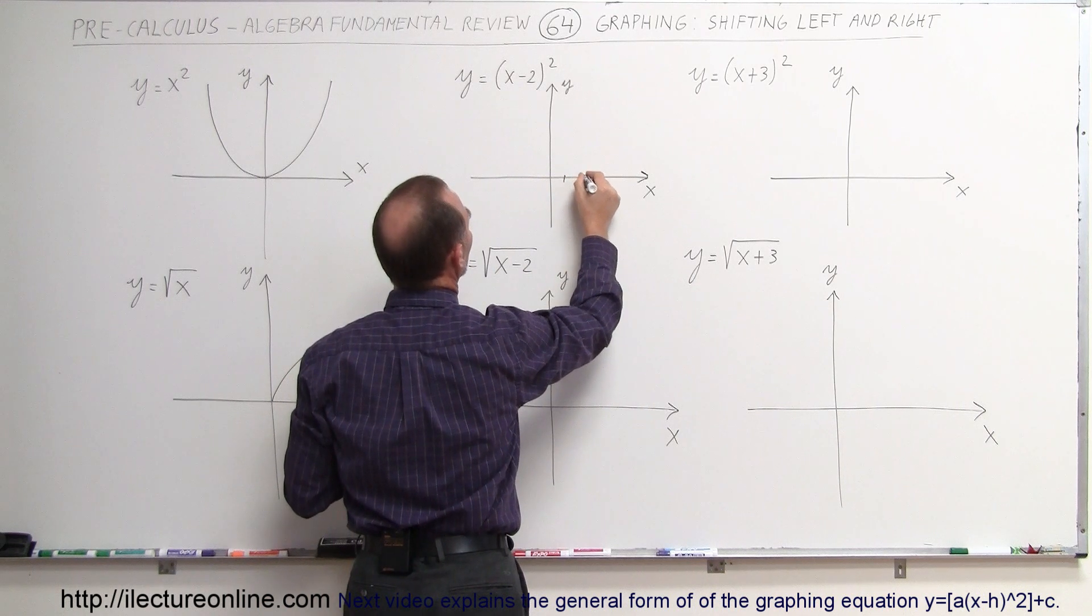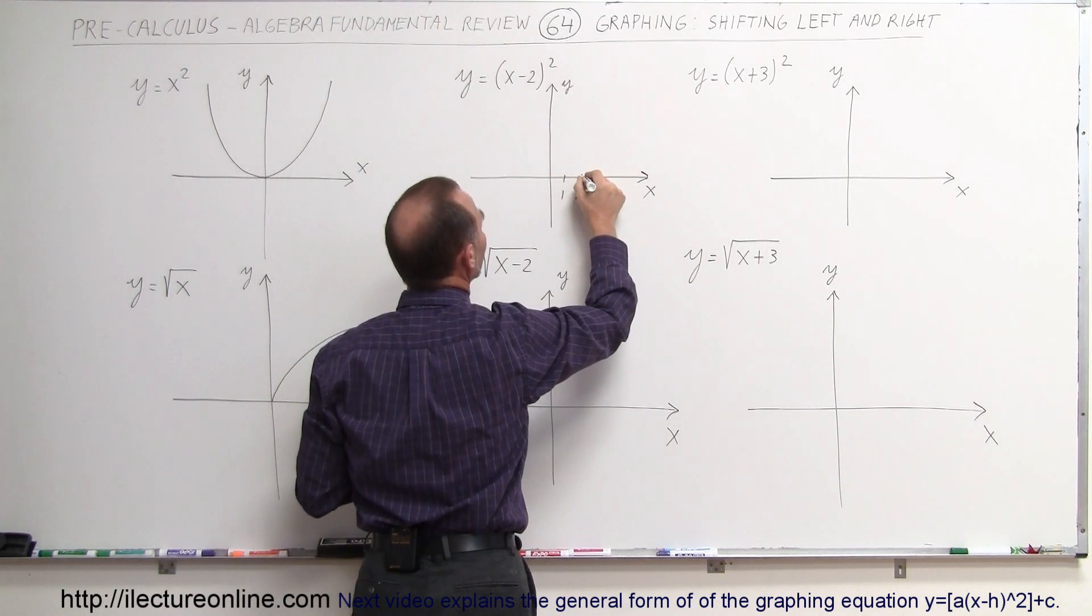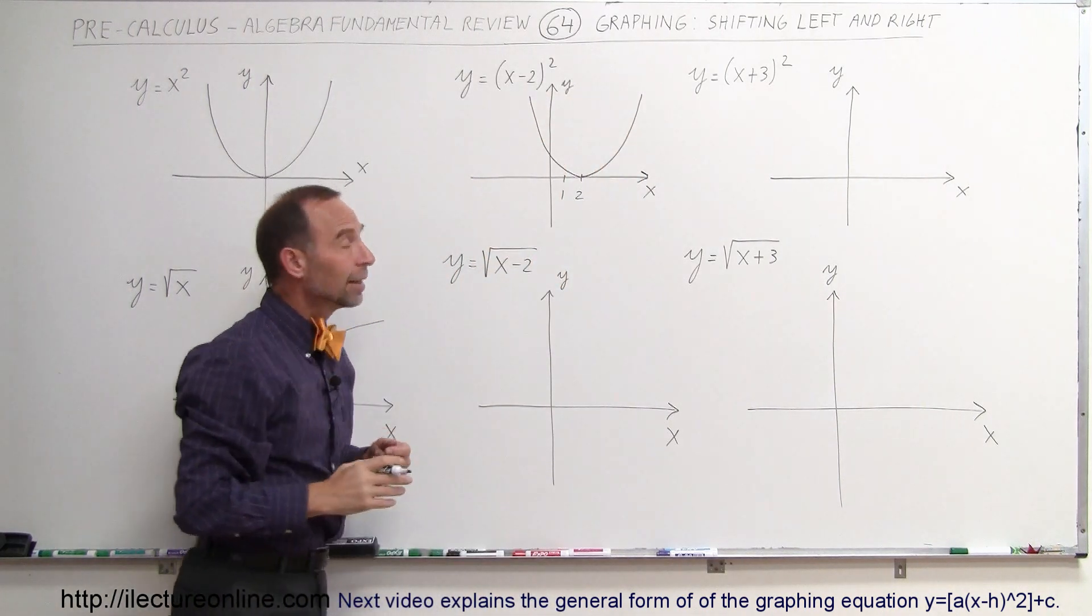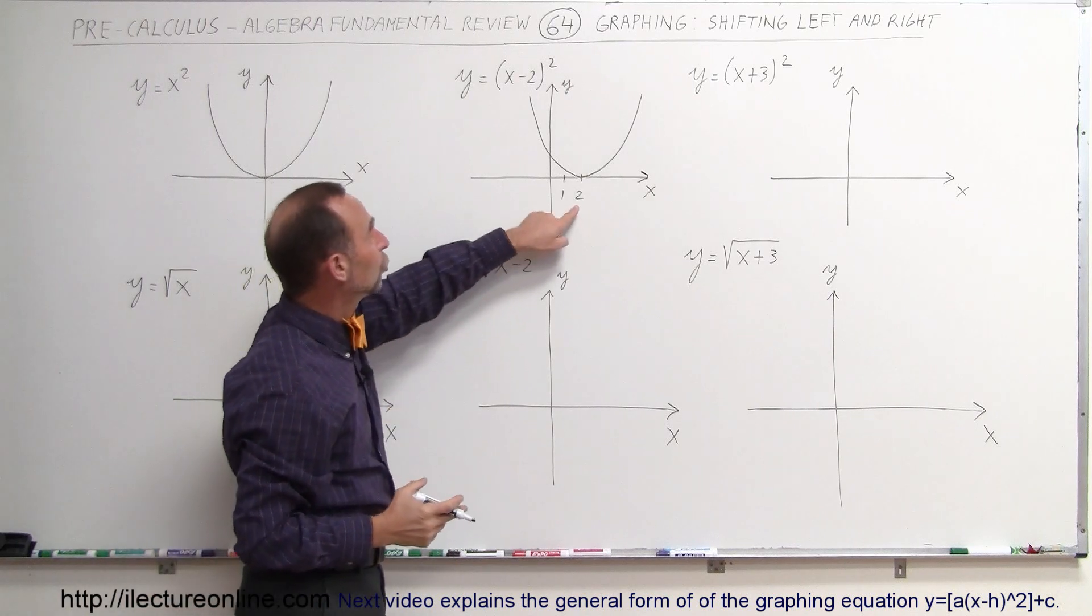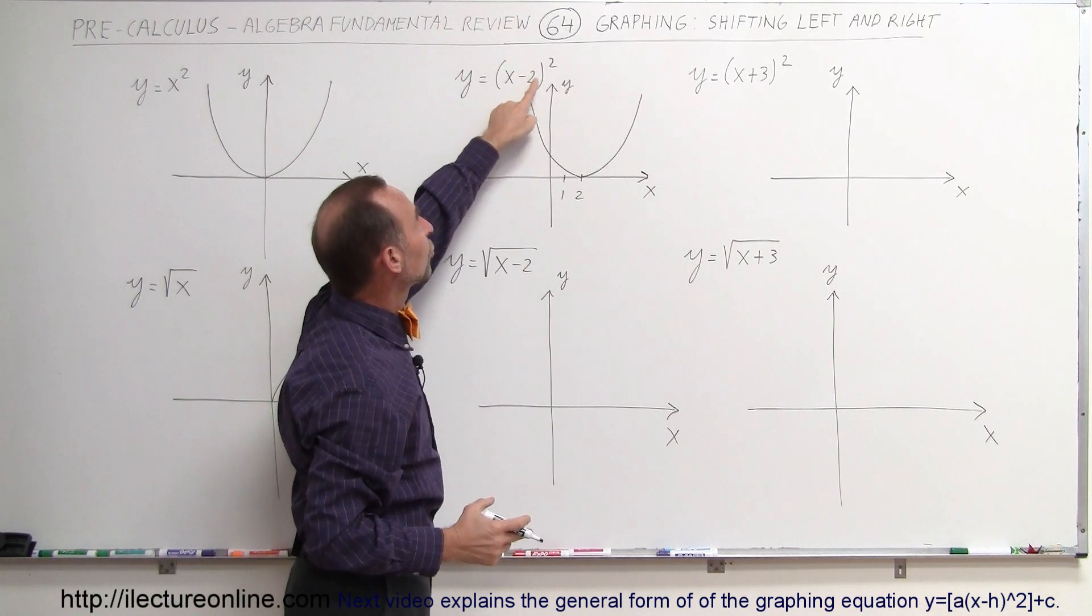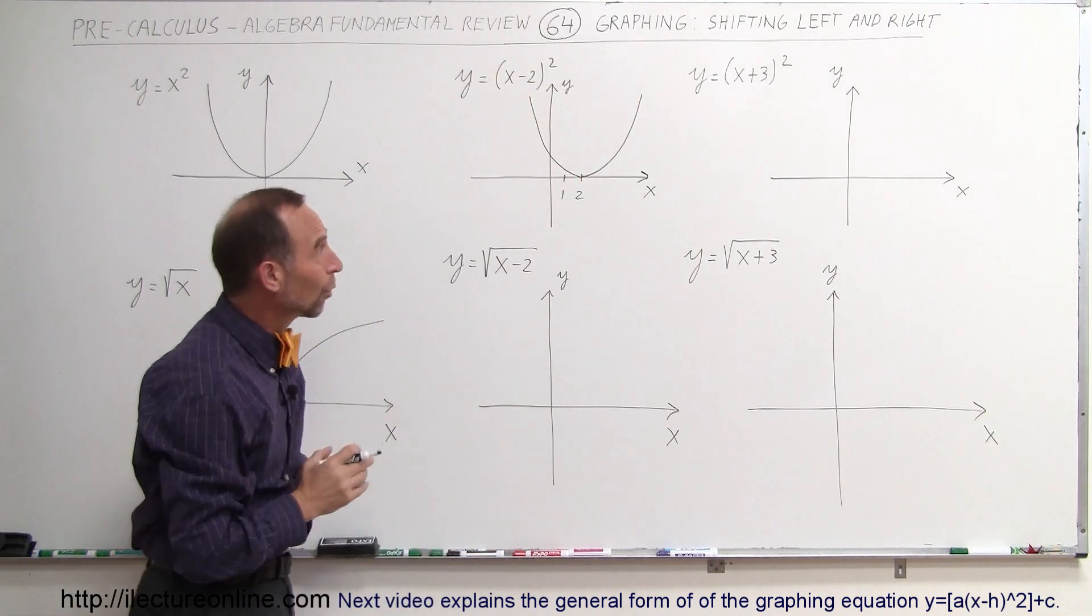So we go 1, 2, and then the parabola will then be centered about this point right here. That's where the new vertex is going to be. And if you want to quickly check that, let's plug in a value for x equals 2. So when you let x equals 2, 2 minus 2 is 0, 0 squared is 0, so y equals 0. That means it's at the right place, so it does work.